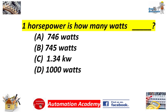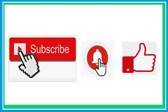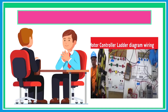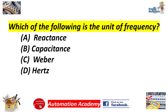1 horsepower is how many watts? Answer: 746 watts. Which of the following is the unit of frequency? A. Reactance. B. Capacitance. C. Weber. D. Hertz. Answer: D. Hertz.